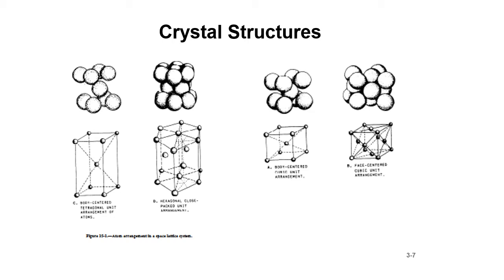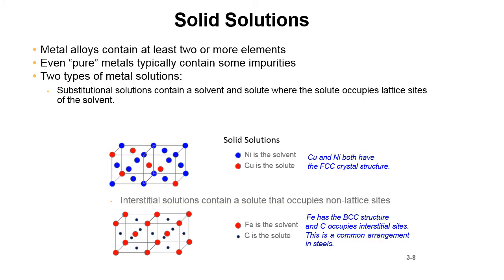Solid solutions. Metal alloys contain at least two or more elements. Even pure metals typically contain some impurities. Two types of metal solutions: substitutional solutions contain a solvent and a solute where the solute occupies lattice sites of the solvent.